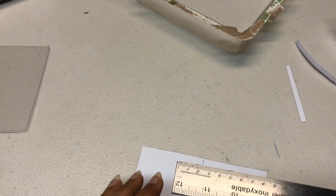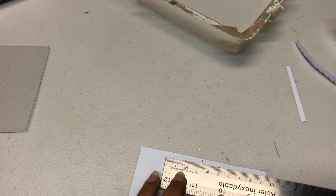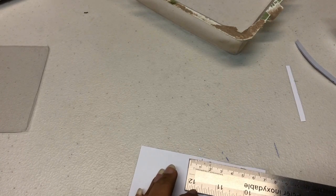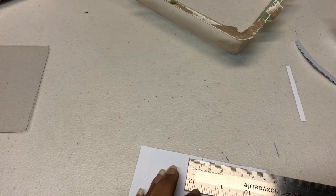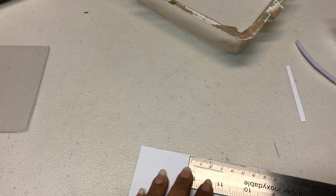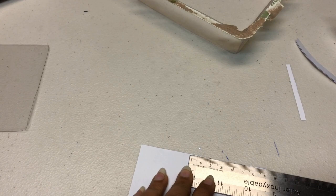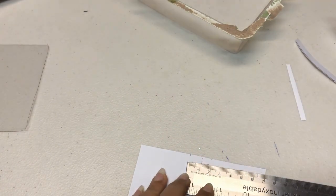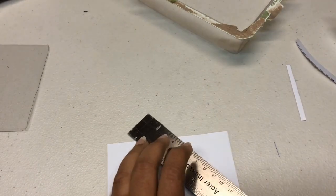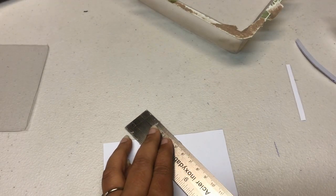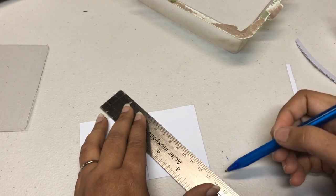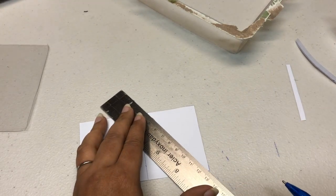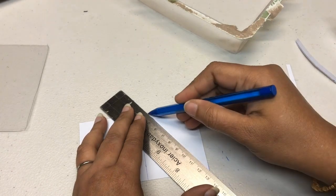One centimeter. Now on the top side, on either side of the middle line, you're going to mark off one centimeter. You're going to draw a 2 centimeter line in the center, that is 1 centimeter on either side of the line.